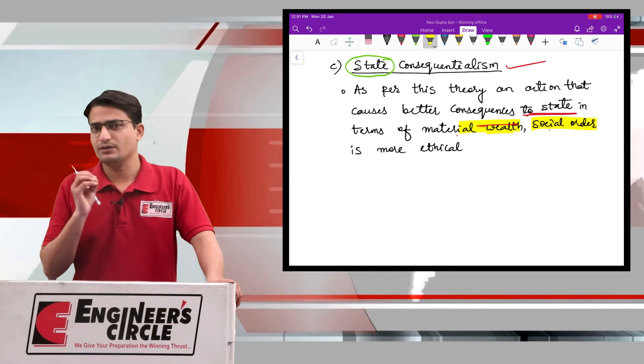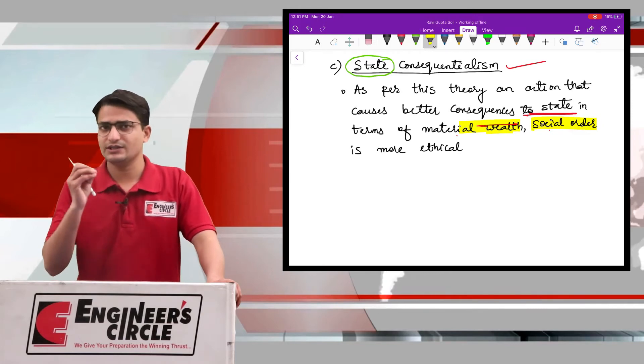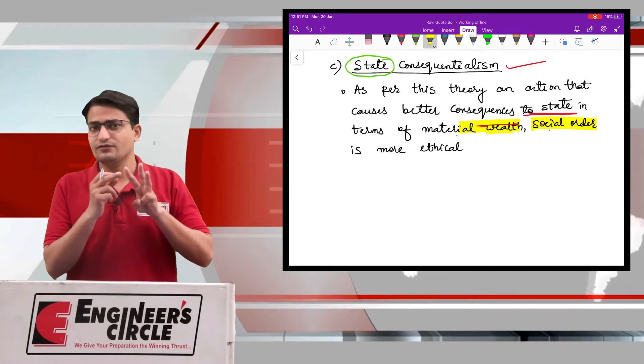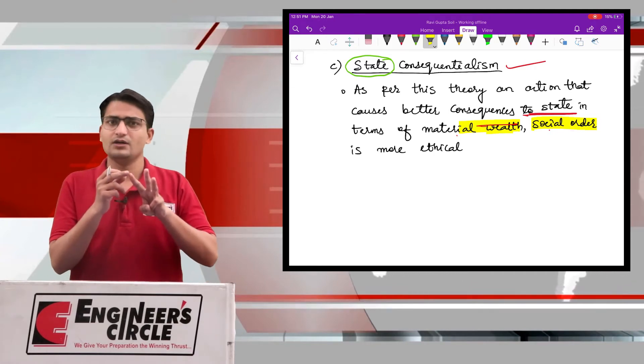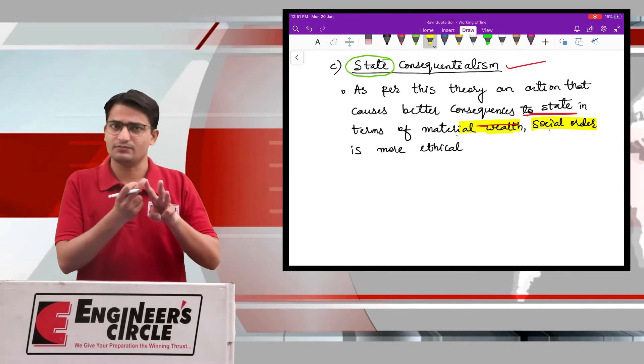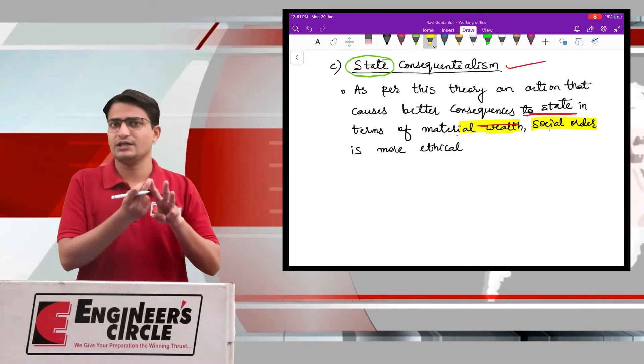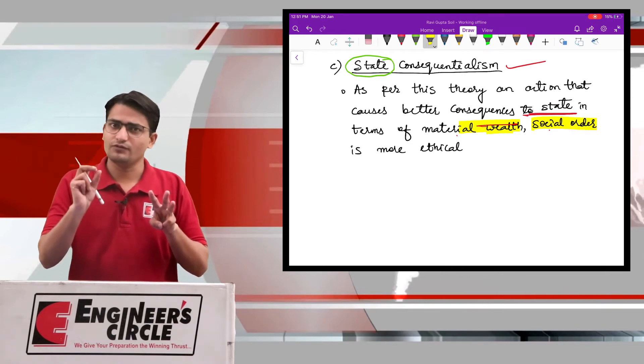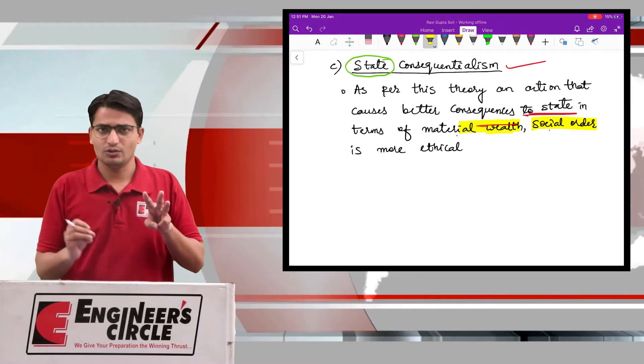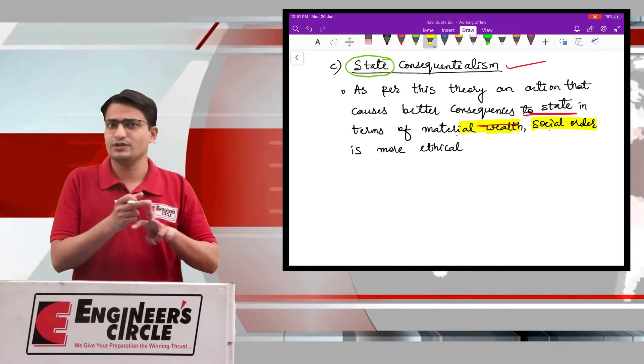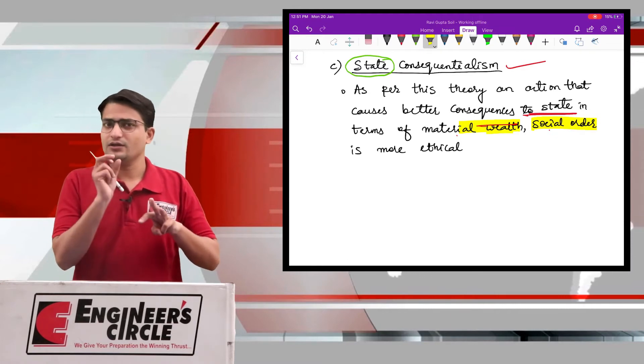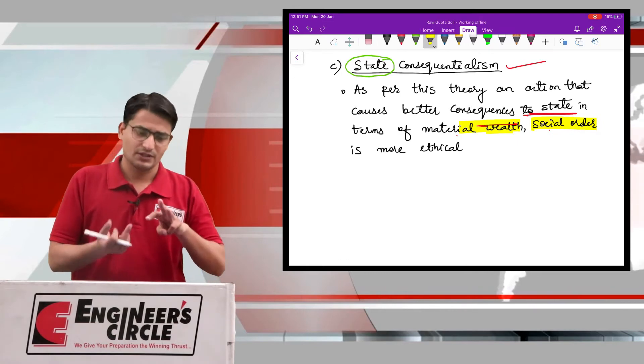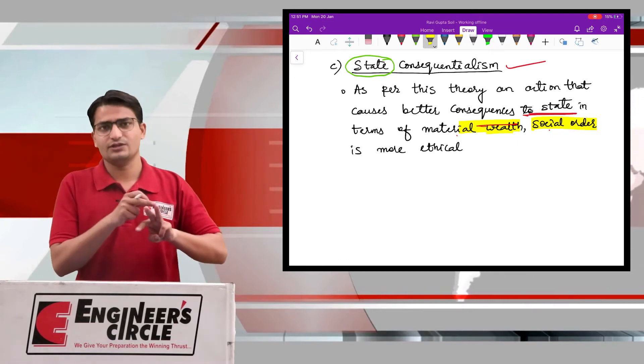Finally, what we have done is we have completed the teleological ethics part. And if we go back, then there were three branches in teleological. The first one was the theory of utilitarianism. It was saying that that action is ethical which promotes good of greatest number of people. The second one was ethical egoism, which is saying that you must take that action which is benefiting your own interest.